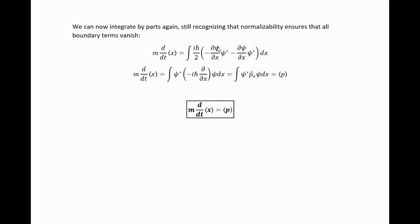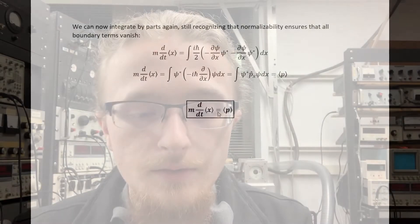We can pull this ih bar in, and we can keep the minus sign in there. We find this expression, but we see this is just a momentum operator, and we find that's just a formula for the expectation value of the momentum operator. So we arrive at p here. Therefore, we found this equation, one of the two equations in Ehrenfest's theorem.